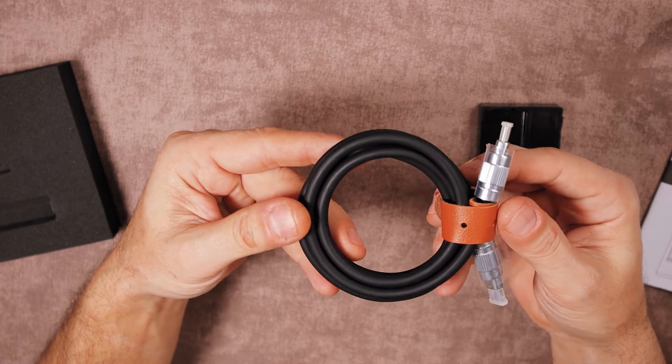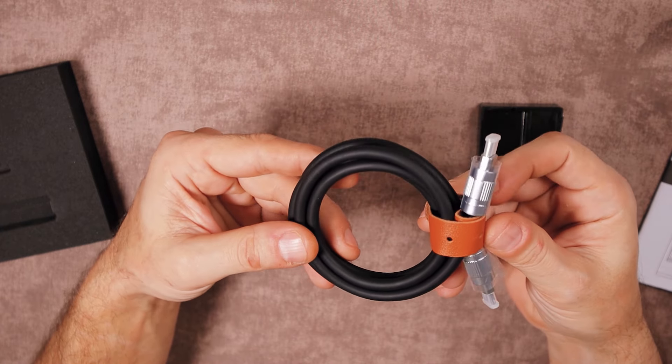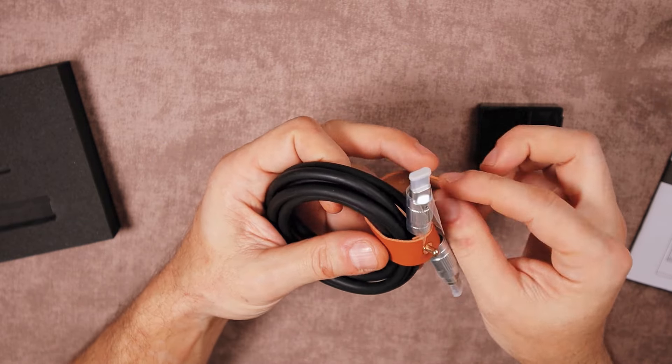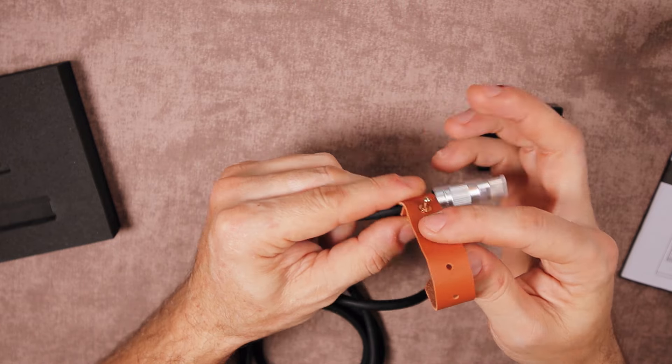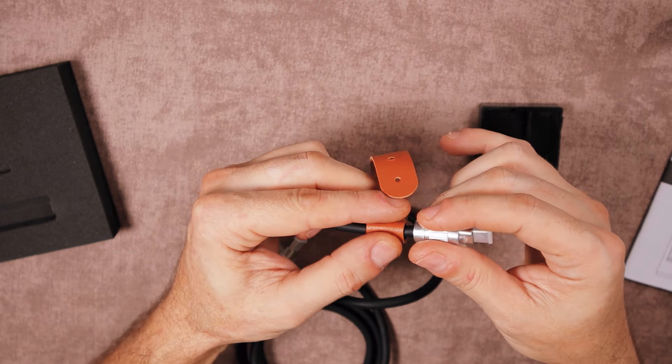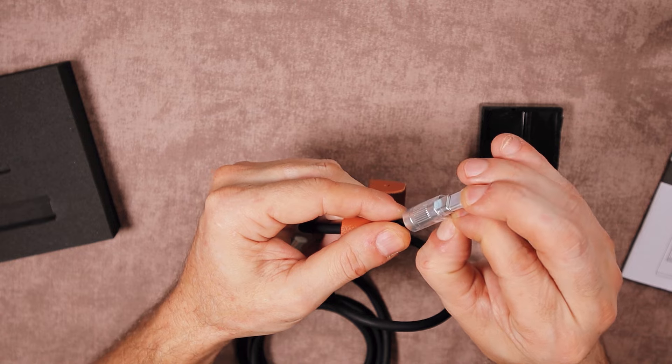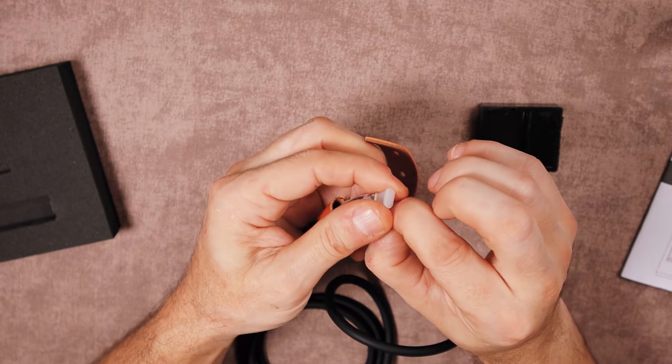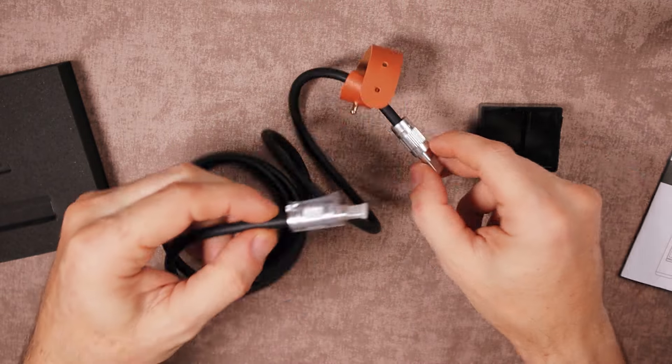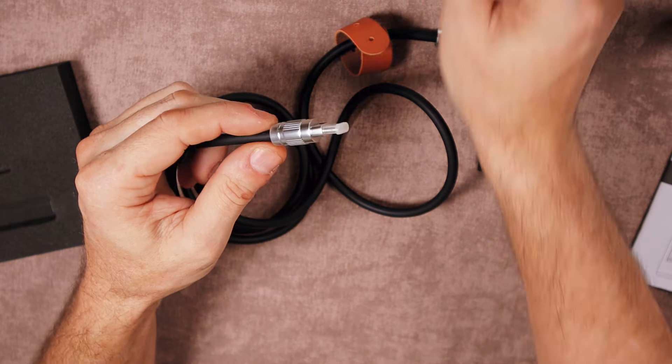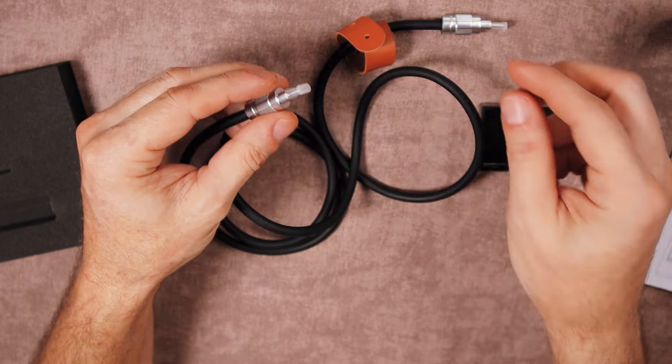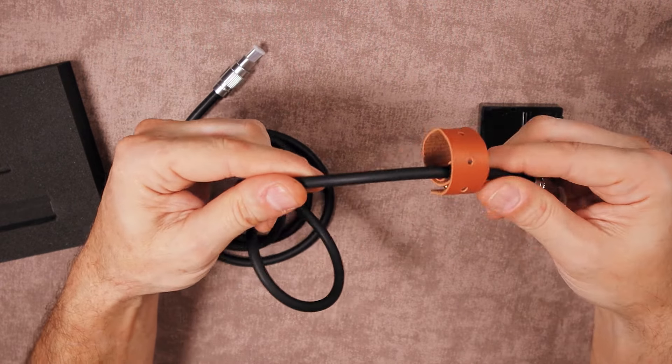In the package we also have this USB-C to USB-C charging cable, or power cable, which comes with this very nice leather strap and I really like this one. I haven't used this cable by the way. I used my phone cable to use the soldering iron, so I'm going to open this one for the first time. It has plastic protection on both ends. The cable seems really nice and strong.